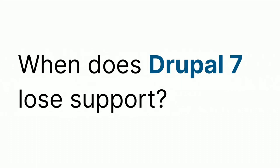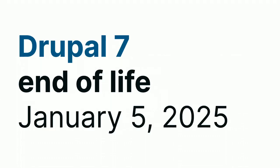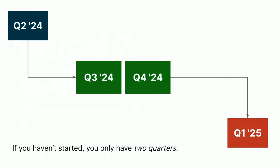Let's do a quick refresher on when Drupal 7 loses support. Drupal 7 end of life is January 5th, 2025. We're in Q2 right now. That means you've got Q3, Q4, and then Drupal 7 is dead — about 12 development sprints at two-week sprints. How much does your team get done in a sprint? Is this something you can do if you didn't start already?